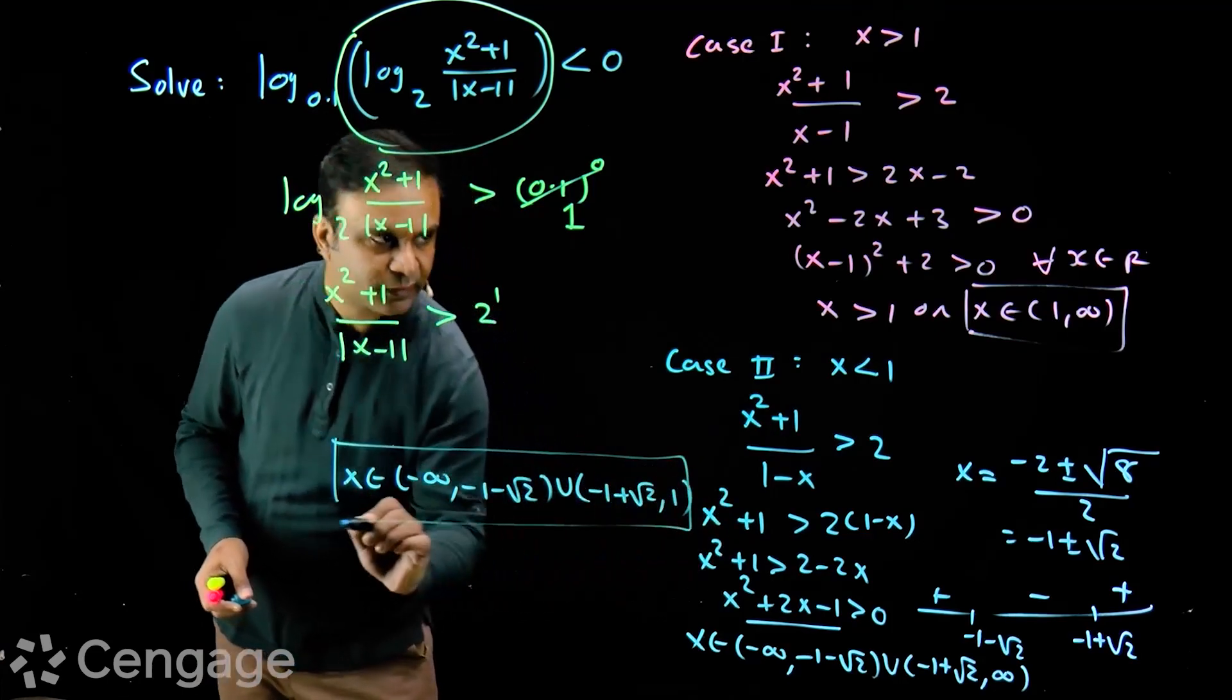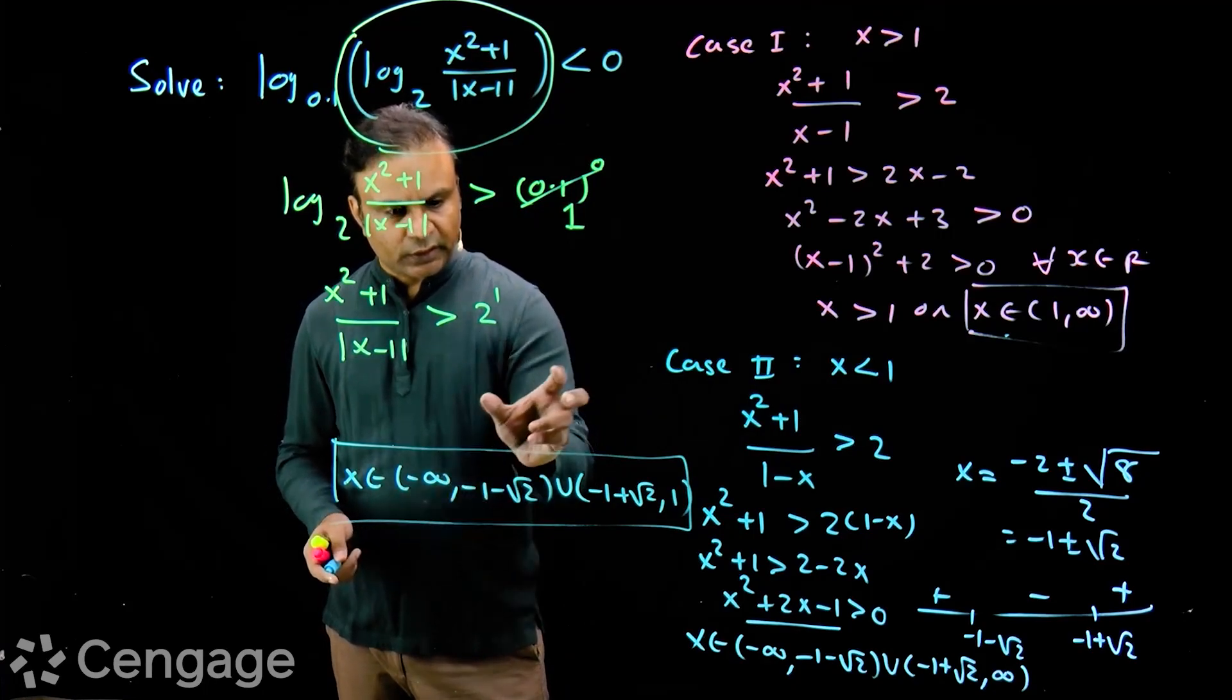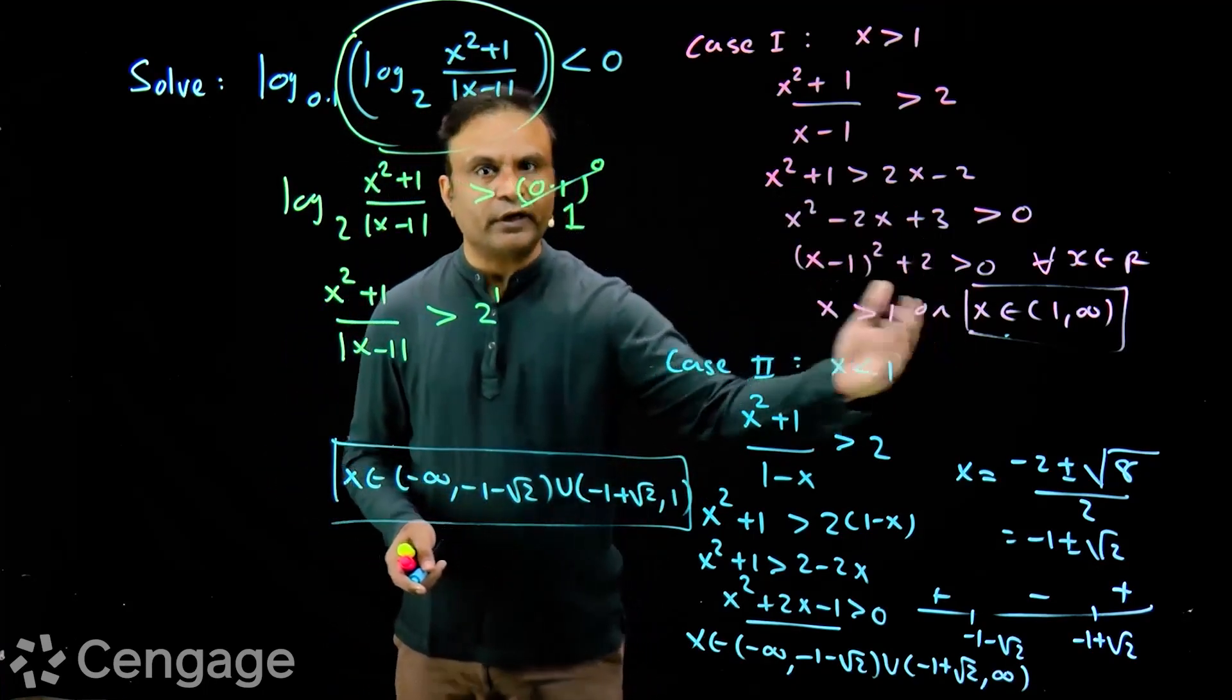We have these values of x as well as those values of x. So total solution will be this union 1 to infinity.